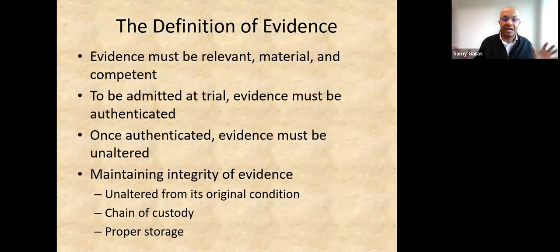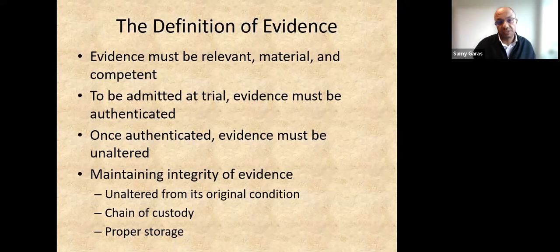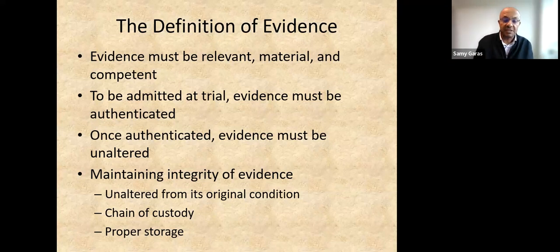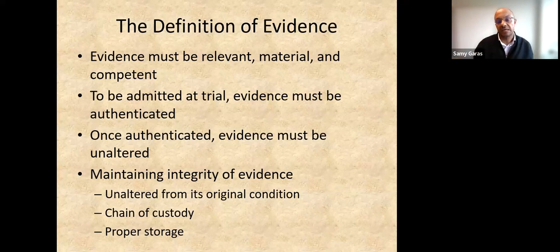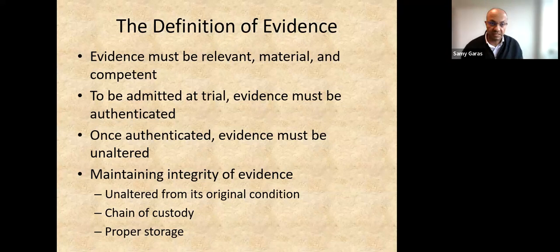No matter what form the evidence takes, it should have certain characteristics based on federal rules. The evidence should be relevant — it should impact the decision of the users of this evidence. If the examiner presents evidence in court, this evidence will make a difference in the court's decision. It could be material — from where did we get this evidence? If we get evidence from somebody outside the company, this is more reliable and has greater material effect than evidence from inside. Number three is the competence of the evidence — how accurate is the evidence? Is it really accurate? Is it supportive to the case?